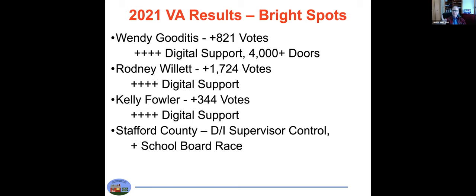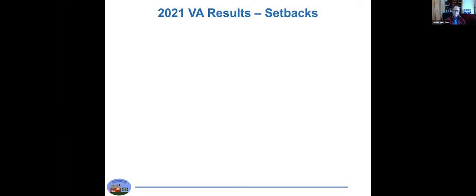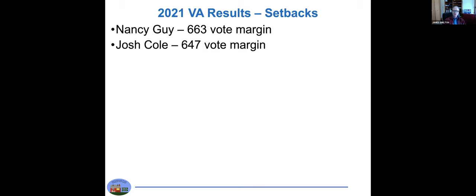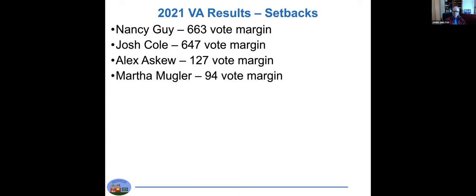But here are the heartbreakers: Nancy Guy losing by 600, Josh Cole 600 and some, Alex Askew a little over 100, Martha Mugler by 94. Those last two are going to have a recount because it's less than a half a percent difference. I think it's not likely unfortunately that we're going to win.